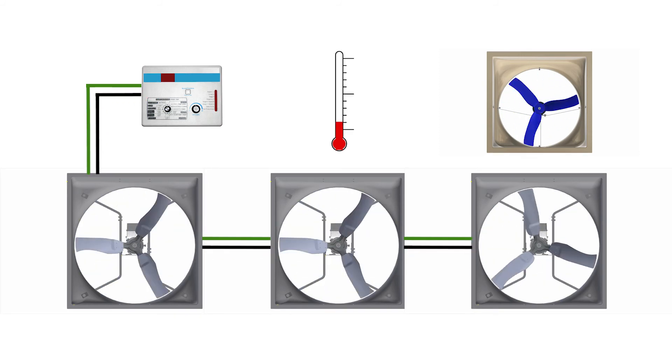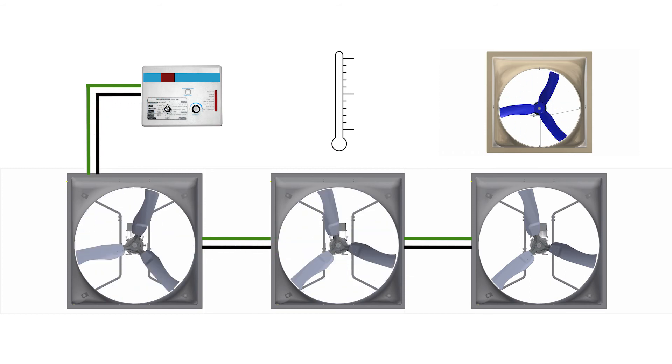Direct drive variable speed fans deliver superior CFM to watts rating when running at lower speeds. At 50% capacity, an Infinity fan can reach efficiencies as high as 36 cubic feet per minute per watt.